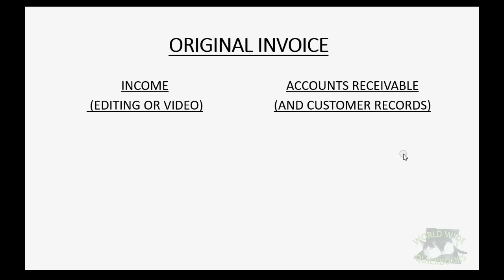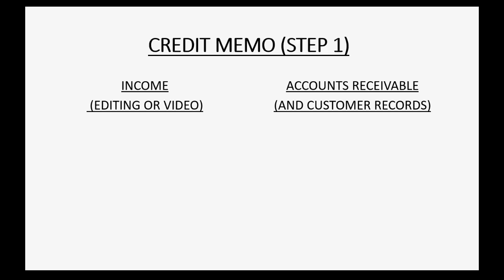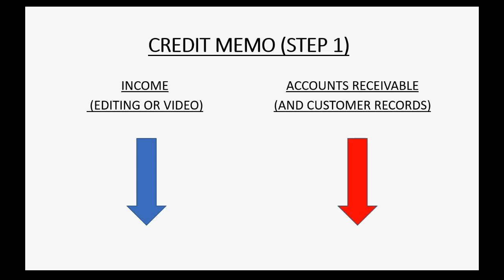On the original invoice, the income went up and accounts receivable and the customer records went up at the moment we made the invoice. So in step one, when you make a credit memo, the income related to that invoice is going to go down and the customer's balance will go down in the customer records.